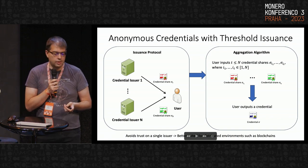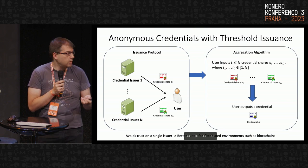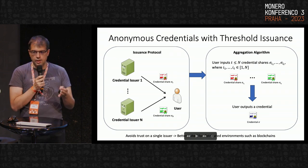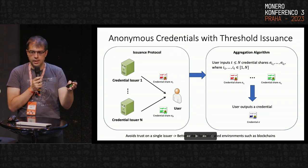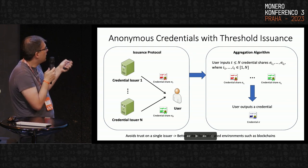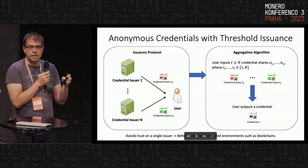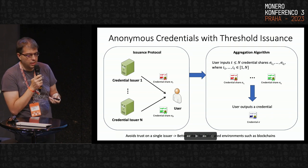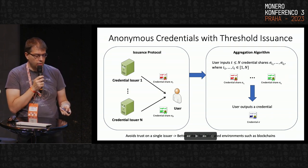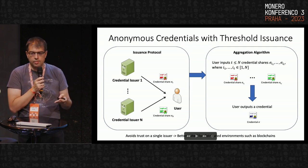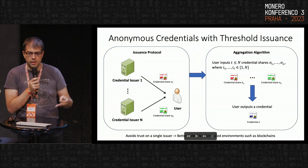With threshold issuance, instead of having only one credential issuer, we have n credential issuers. The user needs to interact with and obtain a credential share from at least a threshold number t (where t ≤ n) of credential issuers in order to obtain a valid credential. Once that is done, using an aggregation algorithm, the user aggregates all those credential shares and obtains a valid credential that is verifiable with the public key of the system.